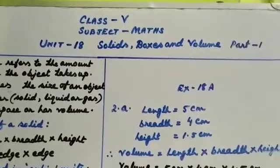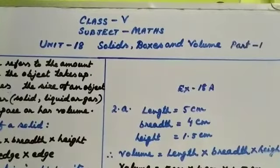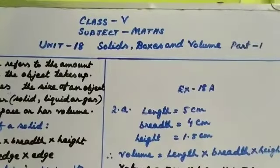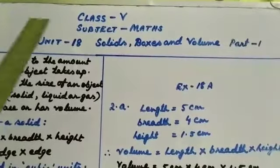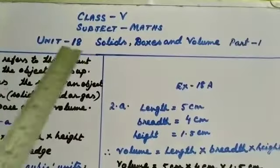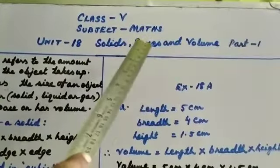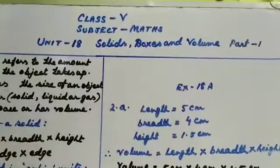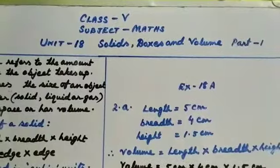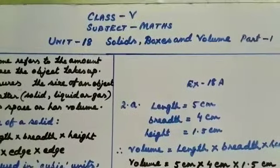Om Namah Shivaya students. Today we will learn a new unit — Unit 18: Solid Boxes and Volume. This is Part 1 of your junior maths book.